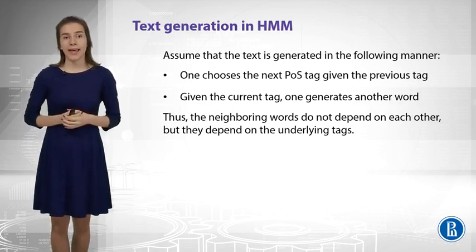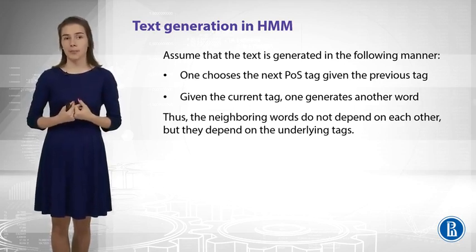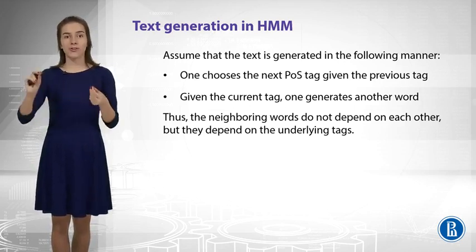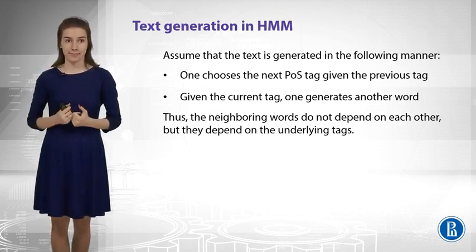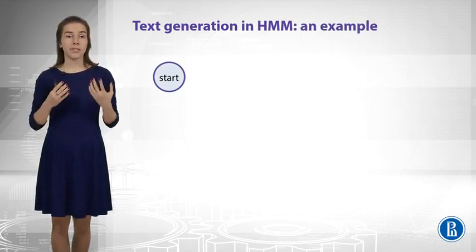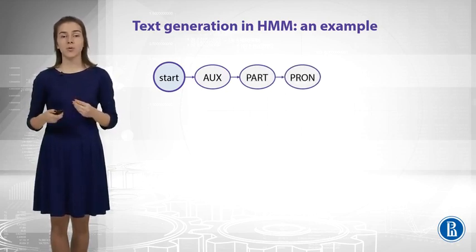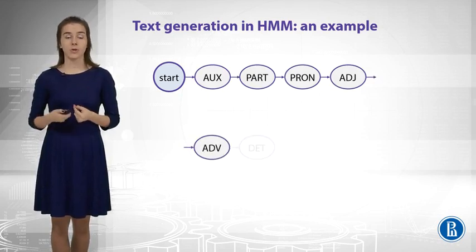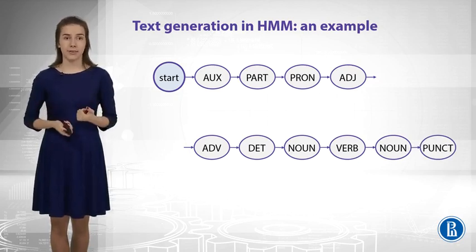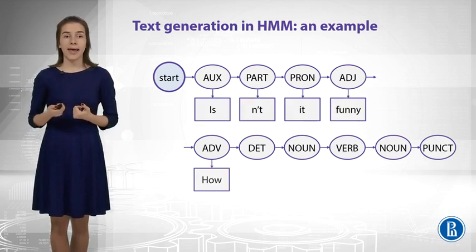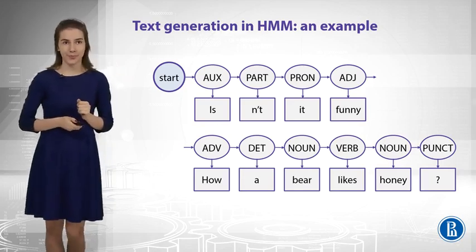The hidden Markov model can be used to model and generate texts. First, we generate a sequence of tags starting from the special start tag, using transition probabilities. Then, we generate words given the current tags. The model generates a sequence, and here we can see it has generated a nice example from Winnie the Pooh.